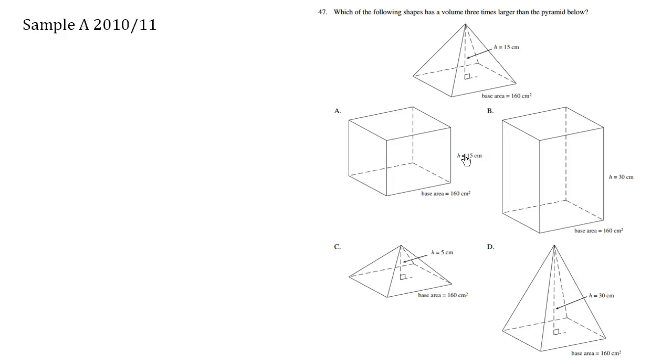So this here is the exact same dimensions except for the fact that we have a rectangular prism as opposed to a pyramid. So what we have here is triple the volume.